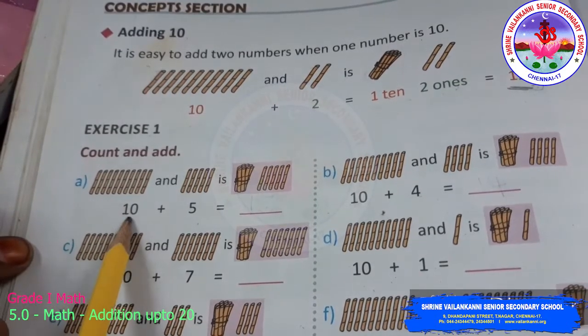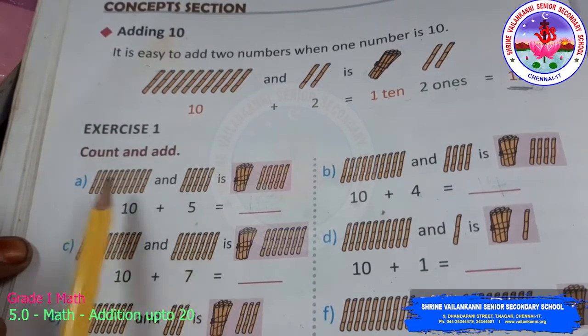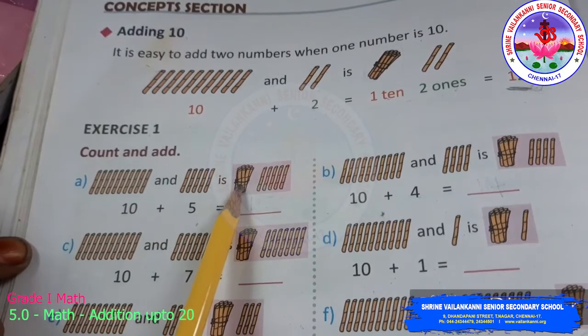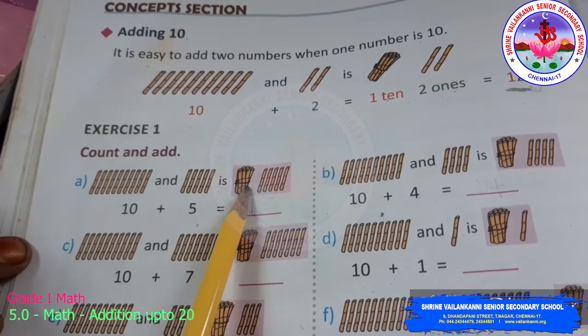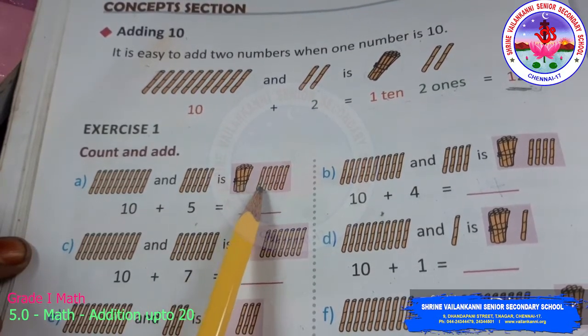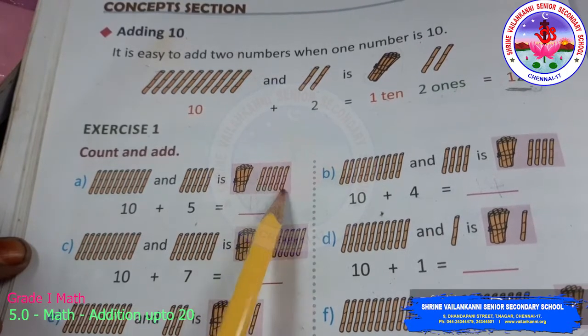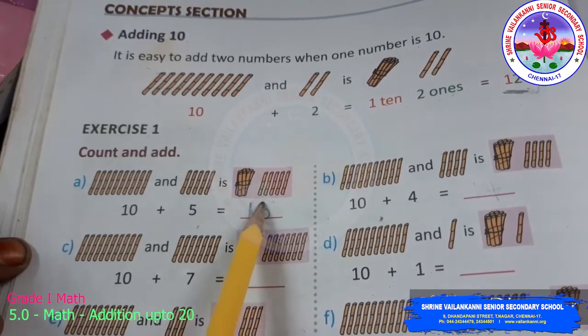First sum, you are going to add 10 plus 5. 10 and 5. You bundle it up as 10 and you count after 10. After 10, 11, 12, 13, 14, 15. So the answer is 15.